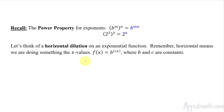That leads us to something called a horizontal dilation. Translation is shifting left, right, up, or down; dilation is multiplying, which stretches or shrinks. So if we take b to the x and multiply x by some constant c, it will stretch or shrink it horizontally. You can rewrite b to the cx as (b^c) raised to the x — so this is just some new base. My original b to the x has simply had its base changed to b^c.